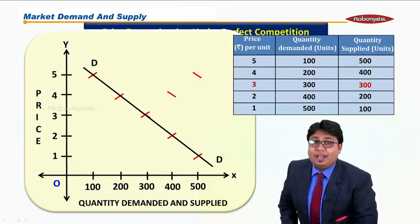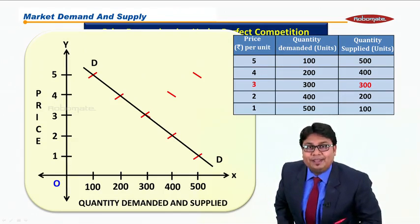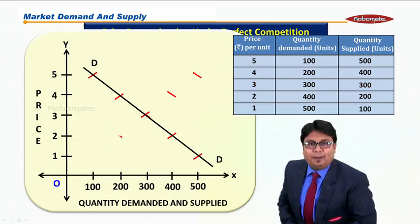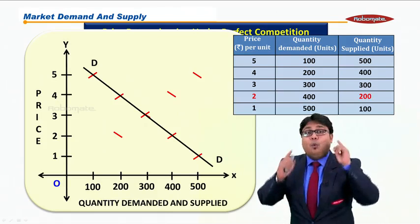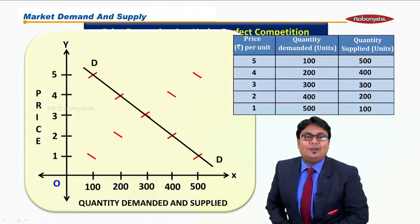Now at rupees 3, supply is equal to demand—where we will mark the point. We have already plotted this point during the demand curve. Now when price is rupees 2, my quantity supplied is 200, and finally when price is rupees 1, supply is 100 units.